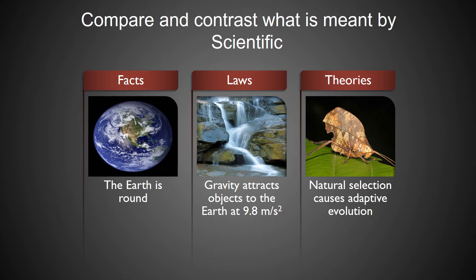Here are some examples. A fact: the earth is round. Here's a law: gravity attracts objects to the earth at about 9.8 meters per second squared. A theory: natural selection causes adaptive evolution. For example, when you look at that katydid in that picture, it looks like a leaf because of natural selection causing it to evolve to look like a leaf.